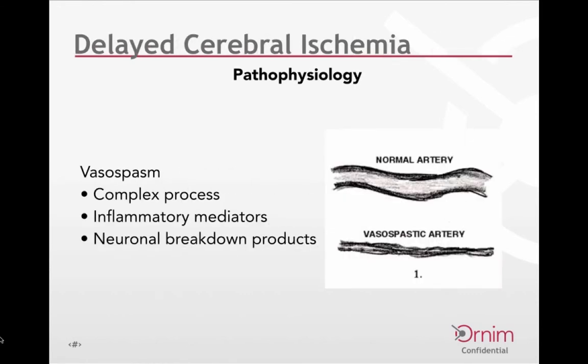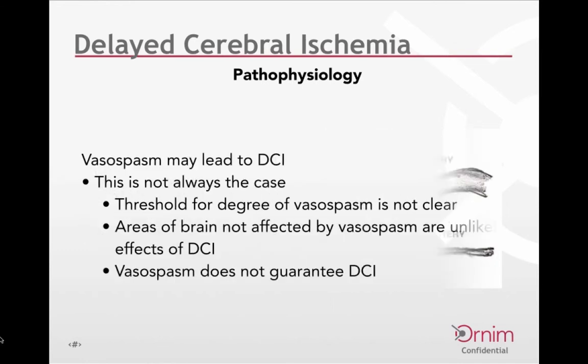The ultimate issue we face with subarachnoid hemorrhage, once the patient is stabilized and the underlying causes of hemorrhage have been controlled, is vasospasm. This is a very complex process. Ultimately it comes down to inflammatory mediators and generally the breakdown products of blood that invest themselves into the walls of arteries, leading to this chronic condition called vasospasm. Neuronal breakdown products also probably play a role and may catalyze some of the vasospastic changes we see in cerebral arteries.